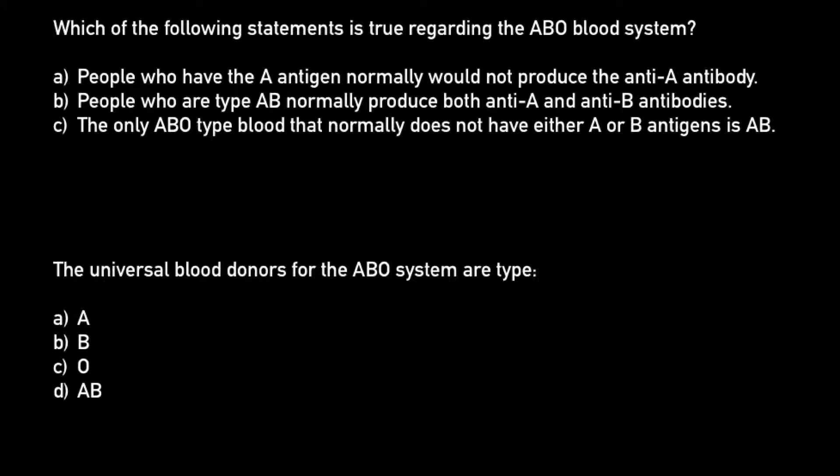Here is the first problem: which of the following statements is true regarding the ABO blood group system? Here are three answers. I would start with answer C or statement C: the only ABO type blood that normally does not have either A or B antigens is blood group AB.